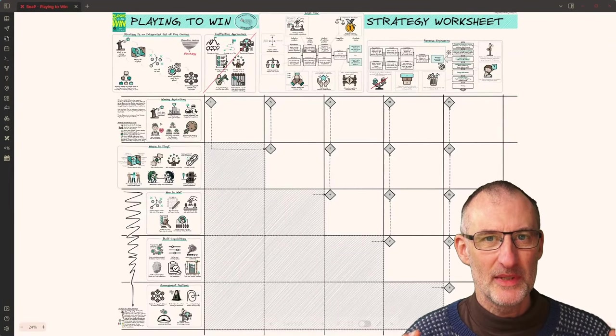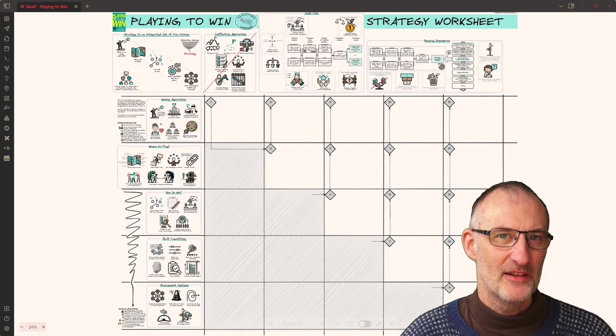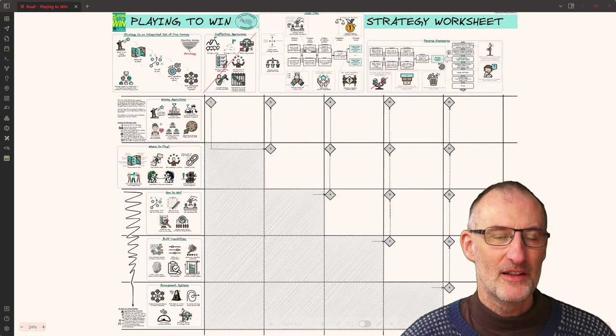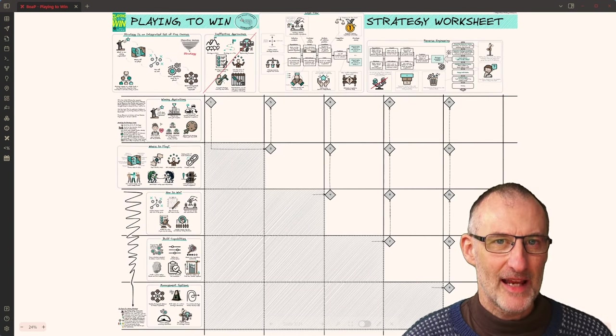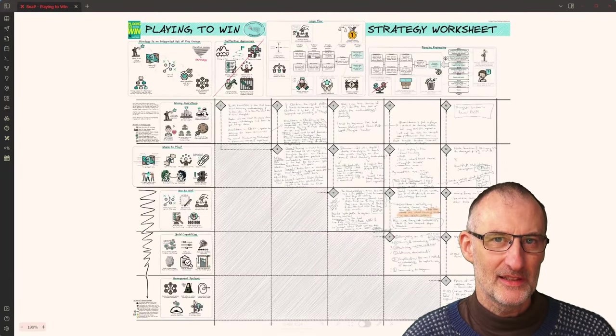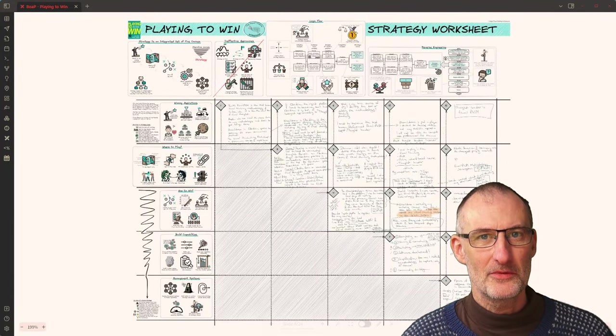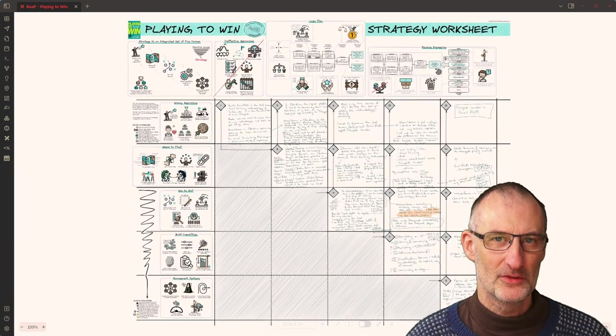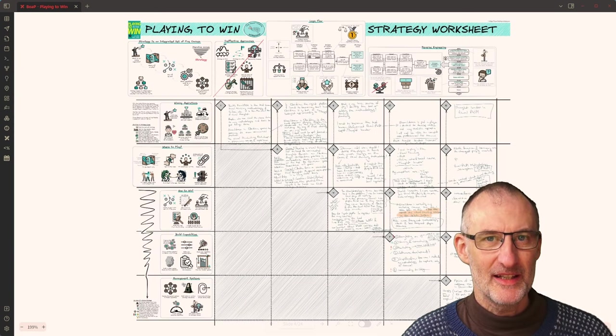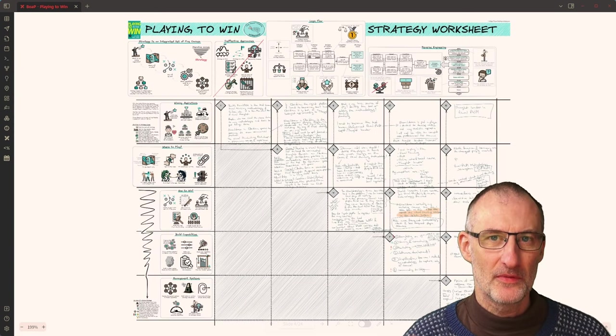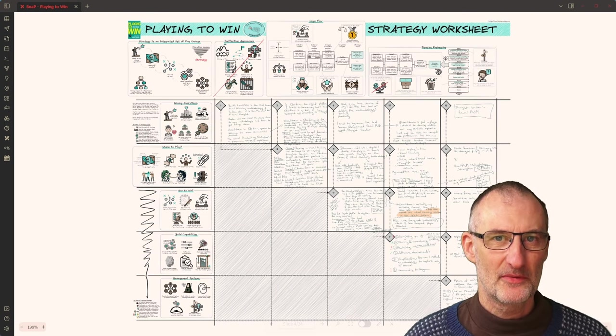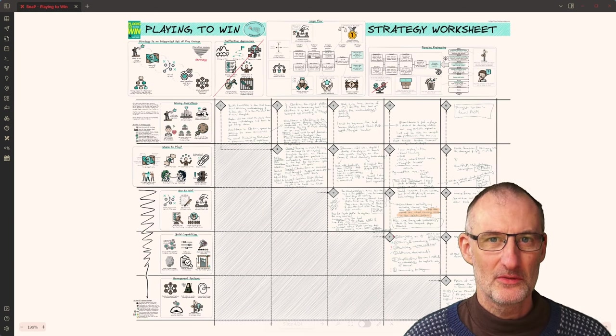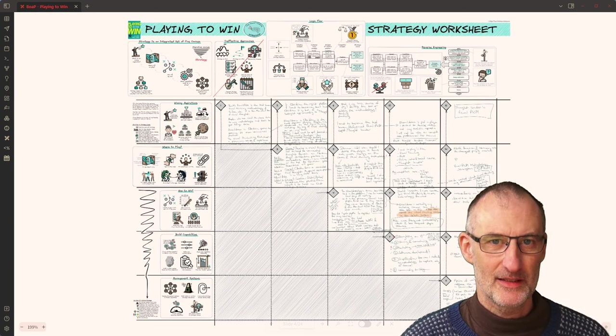This video is going to be a demonstration of my book on a page summary which this time around is more of a worksheet, a strategy worksheet that you can download and fill out for yourself. I've actually given this a test drive and filled out this worksheet with material about my online business and found it a super useful exercise. So if you follow the video you'll understand the basic concepts from the book as well as how to fill out this worksheet, and you can also download the worksheet from a link in the video description.